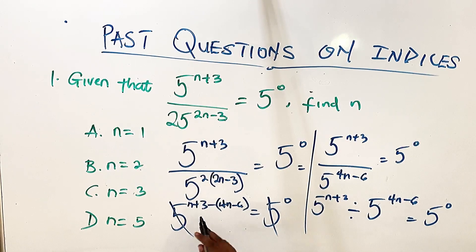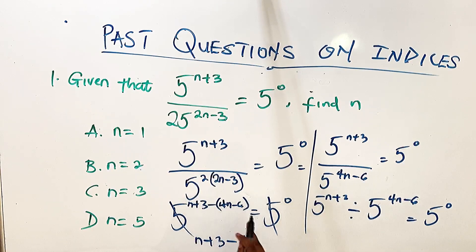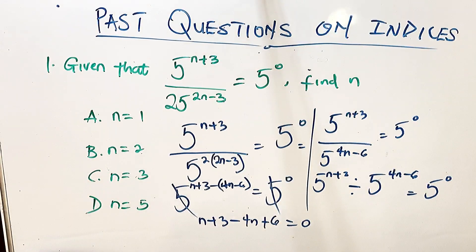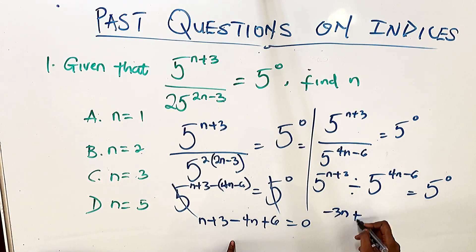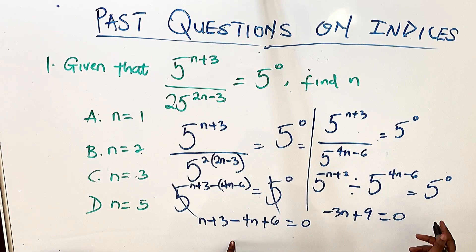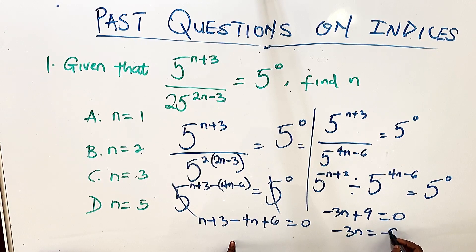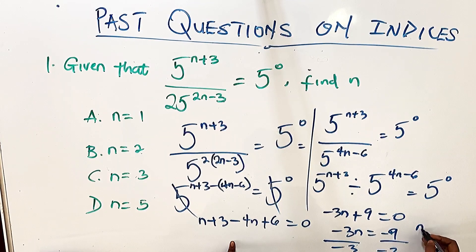Expanding the bracket: n plus 3 minus 4n plus 6 equals 0. Simplifying: n minus 4n is minus 3n, and 3 plus 6 is 9, so minus 3n plus 9 equals 0. Bringing 9 over: minus 3n equals minus 9, and dividing both sides by minus 3 gives n equals 3. That leaves us with C as our answer.